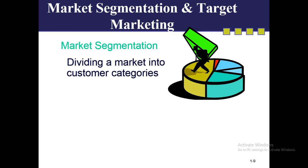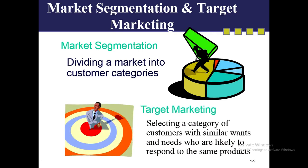A market segment contains people who have similar kinds of needs. For example, if we produce toffees and candies, we will look at how many children are in this area or city — those children are our market segment. So from the entire market, we are picking a piece — targeting only our specific customers.